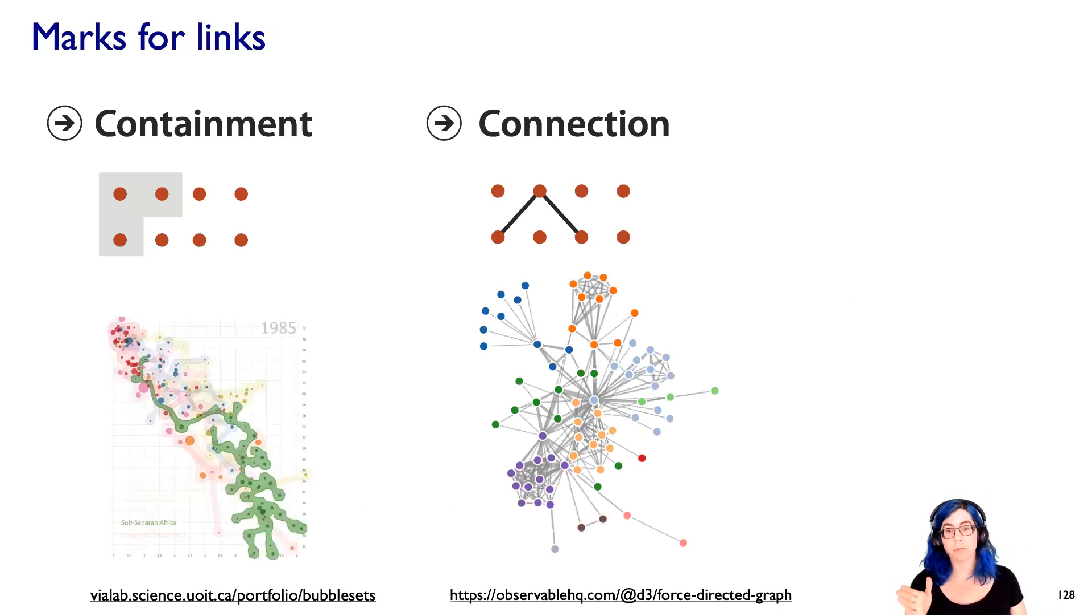Now marks can also be used to represent links, and there's two kinds of link marks. In one, we're using the idea of containment, of nesting, of enclosure, to actually convey some sort of relationship between things. The other one is a connection mark, like you draw a line between two things to show that they're connected. Connection and containment are both ways of expressing linkages between items.